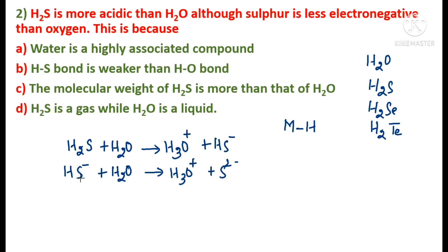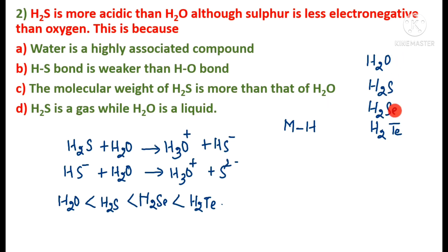The acidic strength of the hydrides increases from H₂S to H₂Te: H₂S < H₂Se < H₂Te. Water is considered less acidic. Moving down the group, the M–H bond energy decreases due to increasing atomic size, so breaking the M–H bond becomes easier. This is why the H–S bond is weaker than the H–O bond, making H₂S more acidic. Option B is correct.